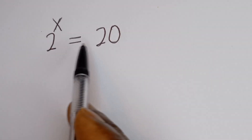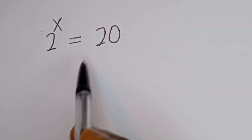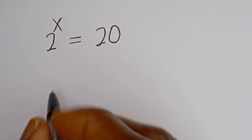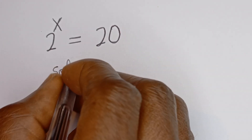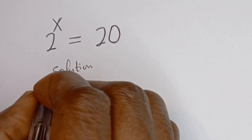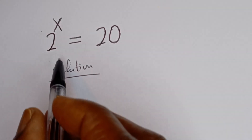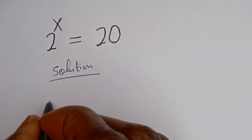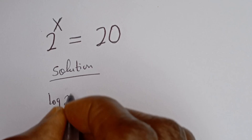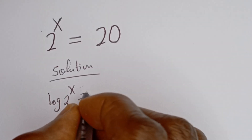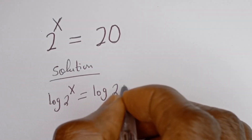Hello. How to solve for s in this equation: 2 to the power of s is equal to 20. Solution — let's take the log of both sides. We have log of 2 to the power of s is equal to log 20.